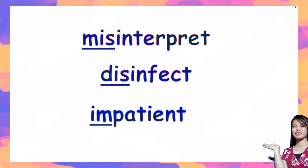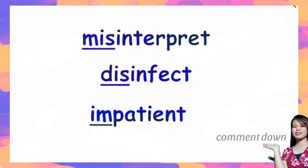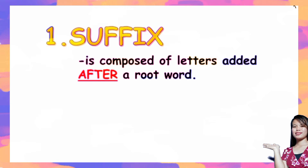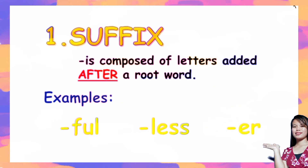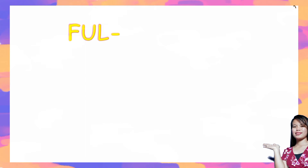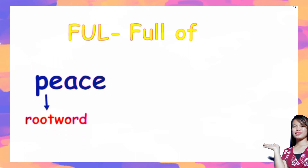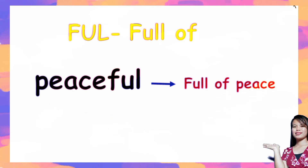Let us have more examples of words with prefixes: misinterpret, disinfect, impatient. Can you give me an example? You may write your examples in the comment section. Now let us proceed to the next type of affix: the suffix. Suffix is composed of letters added after a root word. The suffix 'ful' means full of. For example, the root word 'peace' plus the suffix 'ful' forms 'peaceful,' which means full of peace.